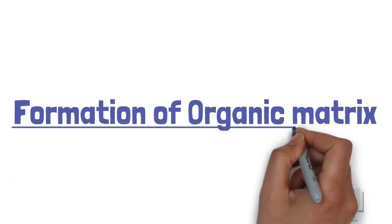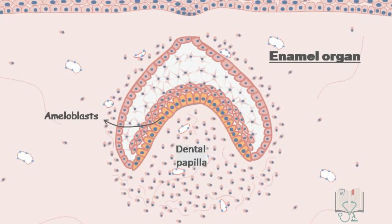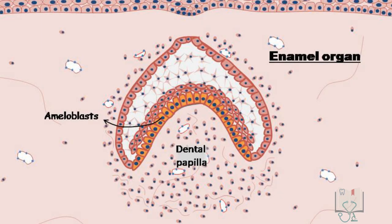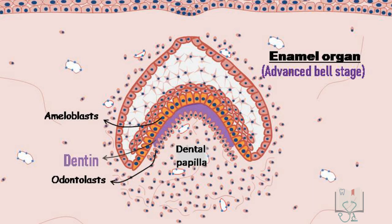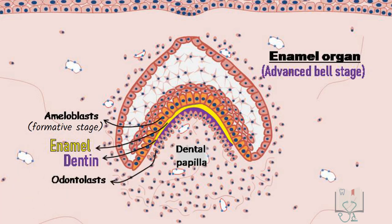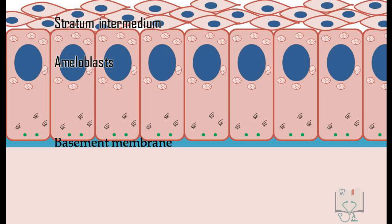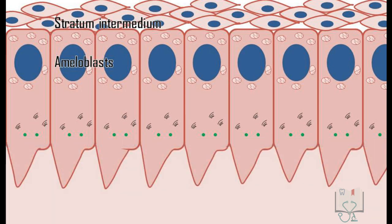During tooth development, when the enamel organ enters the advanced bell stage, odontoblasts start secreting dentine and send a signal to ameloblasts to start amelogenesis and enter the formative stage. The tall columnar ameloblasts develop a pyramidal process on the distal surface called Tomes' process. An incomplete septa partially separates them from the cell proper, called distal terminal bars.